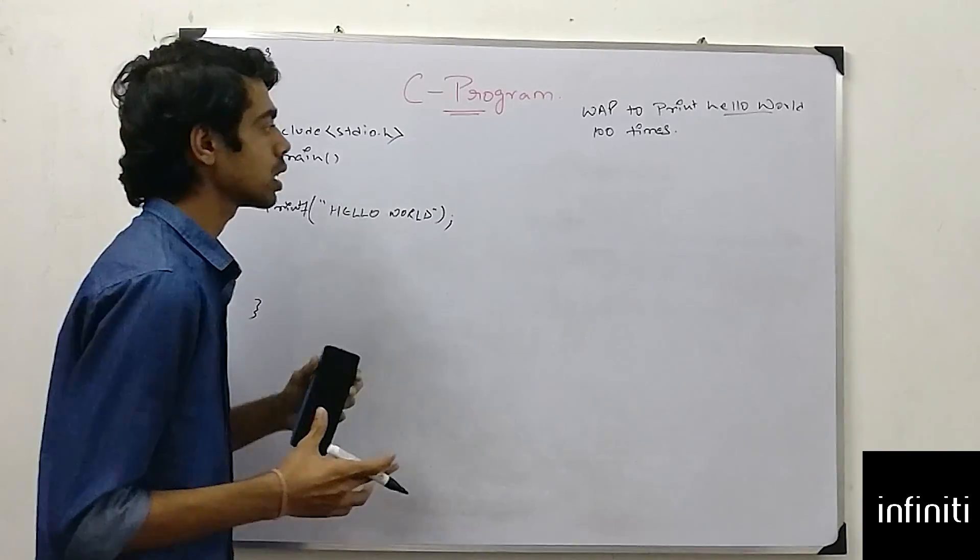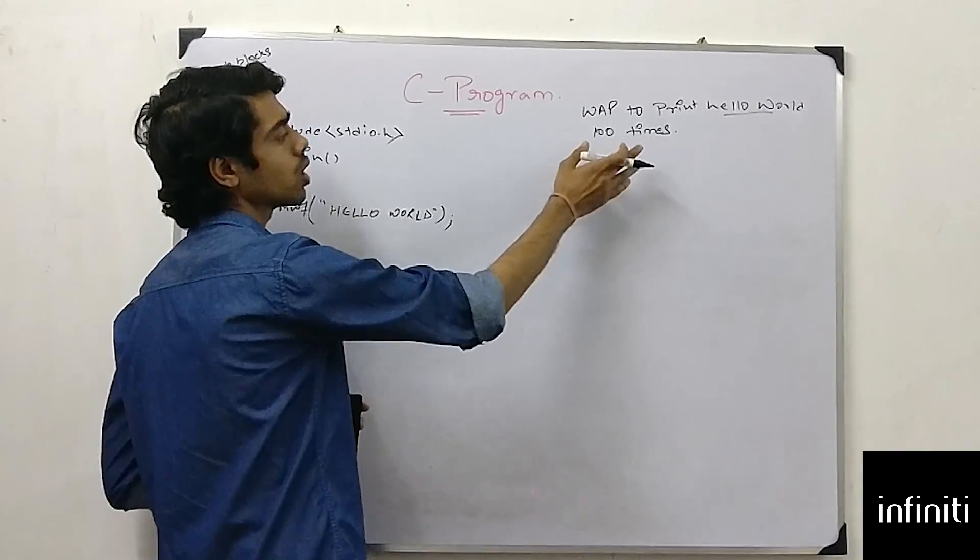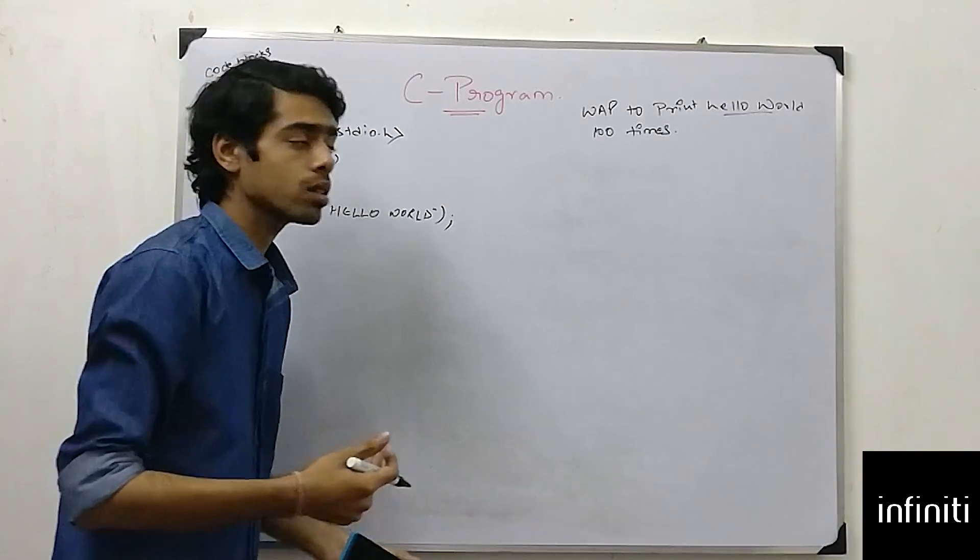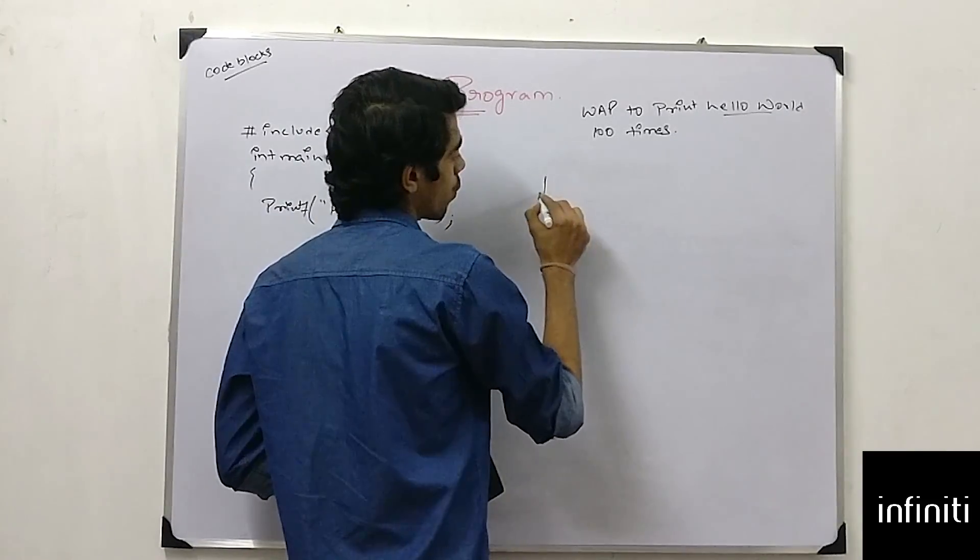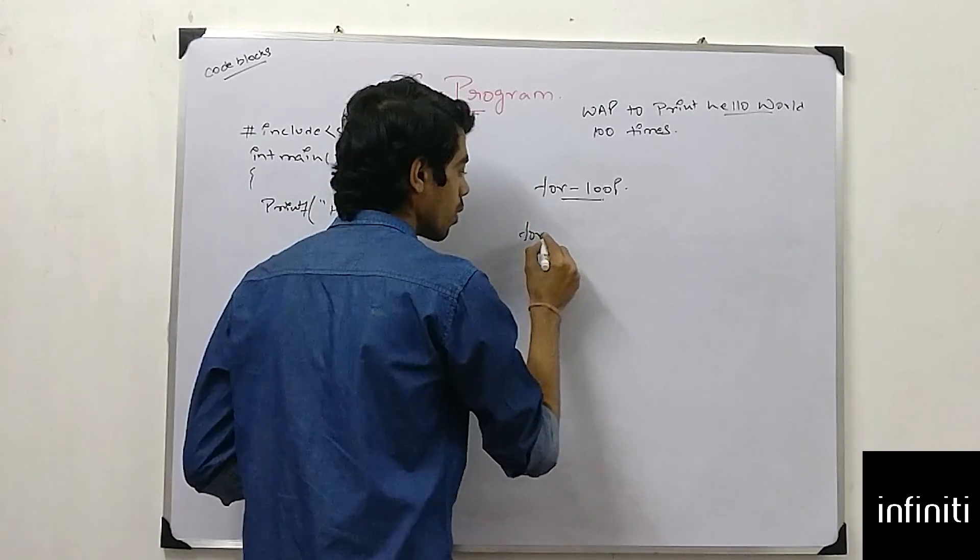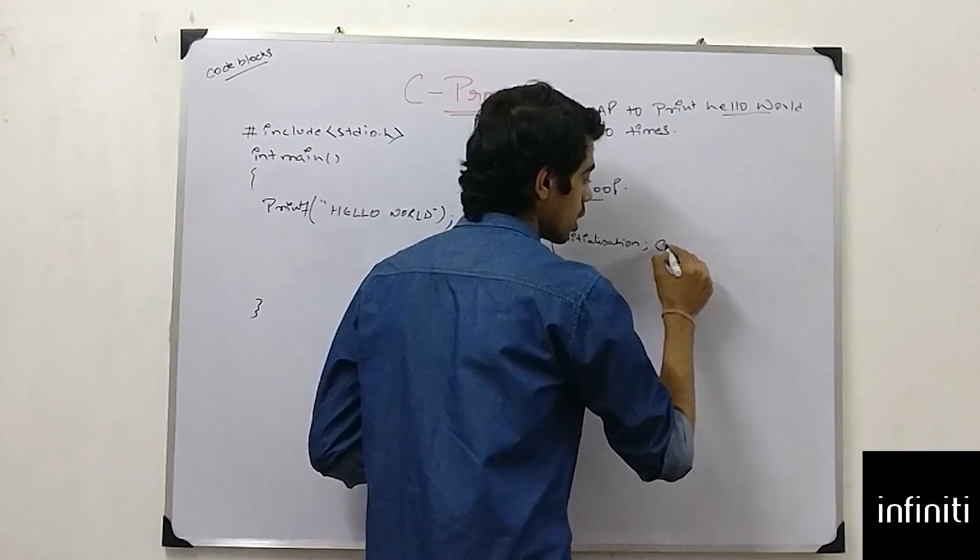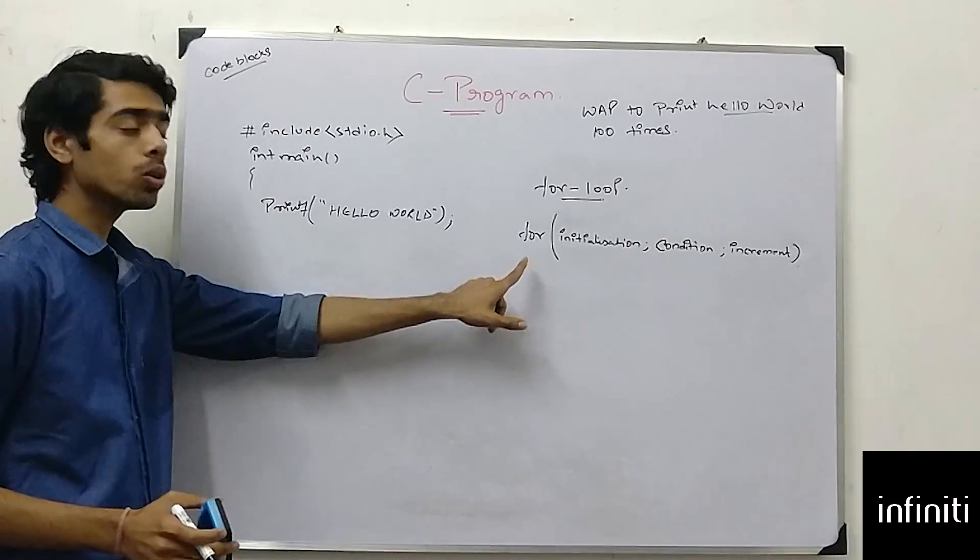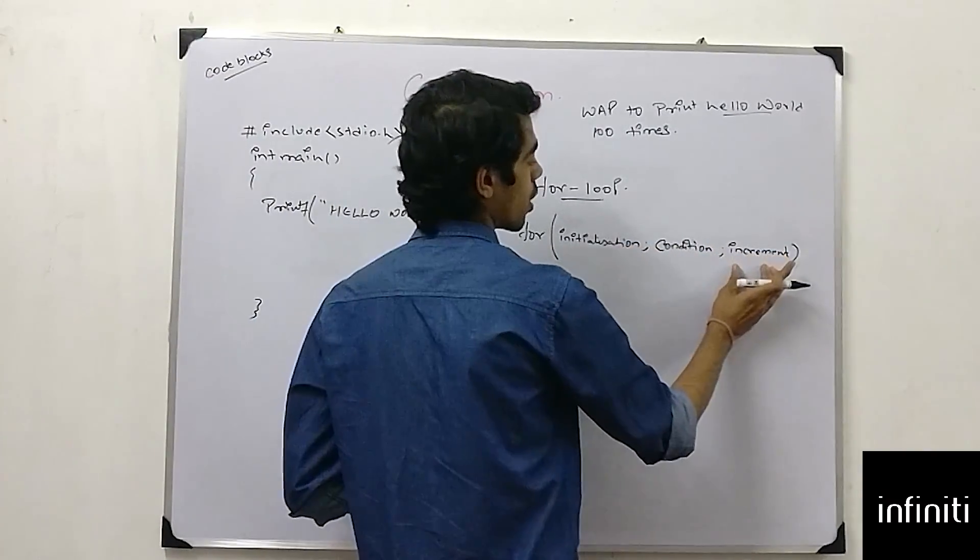A loop condition is such that if I want to print hello world hundred times, I should throw this hello world thing inside a loop which will loop itself for hundred times to print hello world. Like if I use for loop, it's a loop which is something like this: for initialization, then condition, then increment. It's a for loop. It has three things: initialization, condition, and increment.